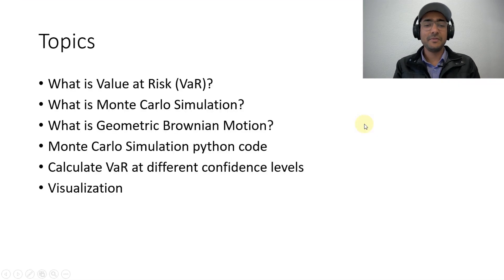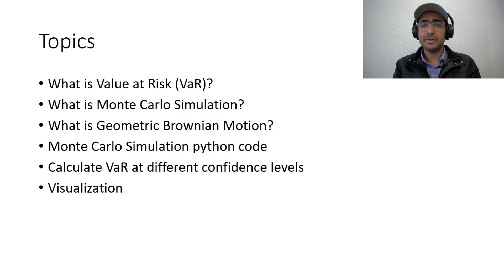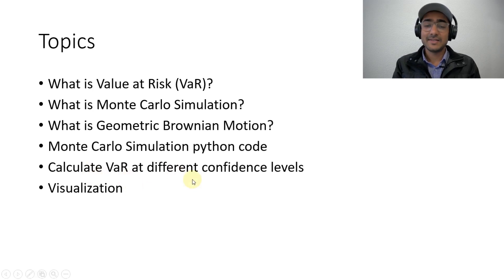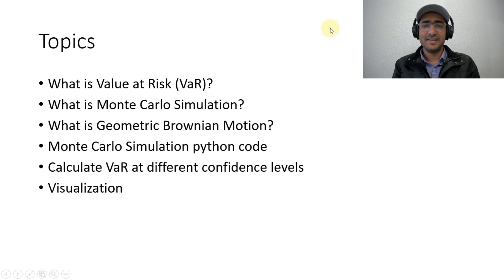So these are the topics we will cover today: what is value at risk, what is Monte Carlo simulation and geometric Brownian motion, then we'll write Python code of Monte Carlo simulation to calculate value at risk, then we'll do the value at risk analysis for different confidence intervals, and finally some data visualization. So are you ready to learn? Let's start.